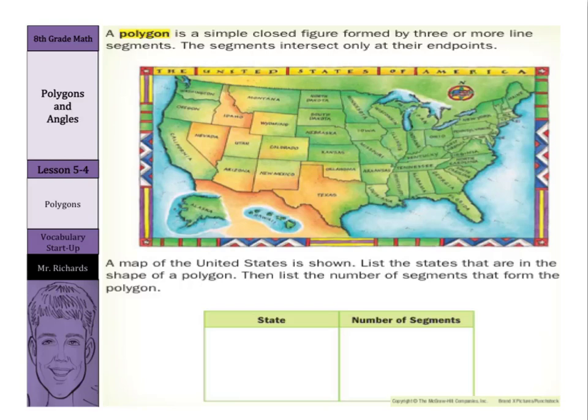A map of the United States is shown. List the states that are in the shape of a polygon. Then list the number of segments that form the polygon. Well, a lot of our states that look like polygons are found out west, so there's a hint for you.